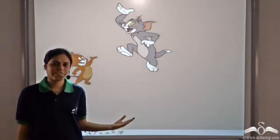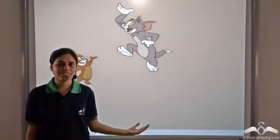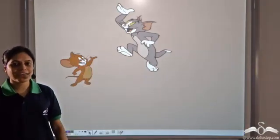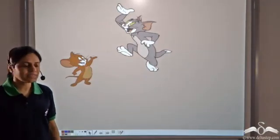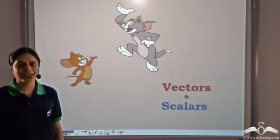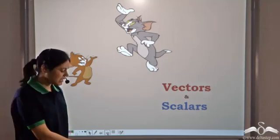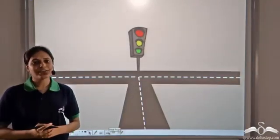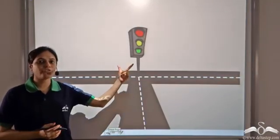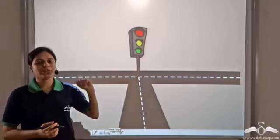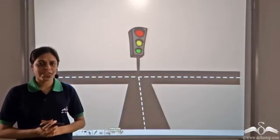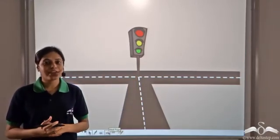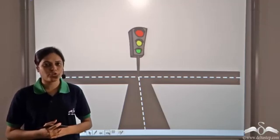Look whom we have got with us in our Physics class today. We have got Tom and Jerry and they will help us study vectors and scalars. One day Tom comes to know that Jerry is standing at a distance of two meters from this traffic signal, and Tom is really excited that finally he will be able to get hold of Jerry.